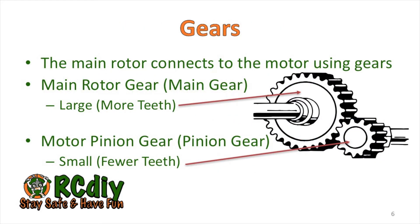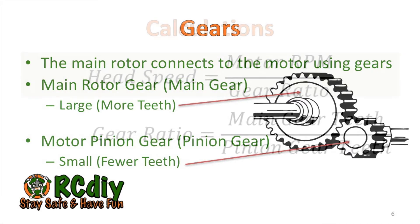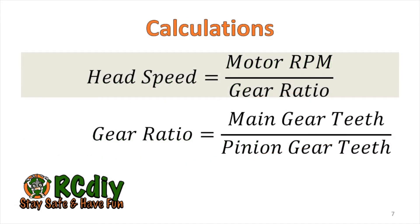The main gear is attached to the main rotor and the pinion gear is attached to the motor. Because the pinion gear has fewer teeth than the main gear, for every one rotation of the main gear, the pinion gear rotates a number of times. If we know this ratio, we can calculate the head speed. The head speed is determined by taking the motor RPM and dividing it by the gear ratio. The gear ratio is calculated by taking the number of teeth on the main gear and dividing it by the number of teeth on the pinion gear.